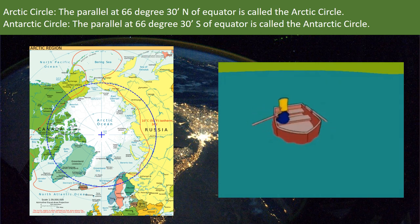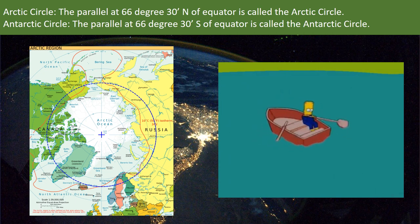The parallel at 66 degree 30 minutes north of equator is called the Arctic Circle. The parallel at 66 degree 30 minutes south of equator is called the Antarctic Circle. In the area between these two parallels throughout the year, daytime lasts within the limit of 24 hours because of the slanting rays of the sun.